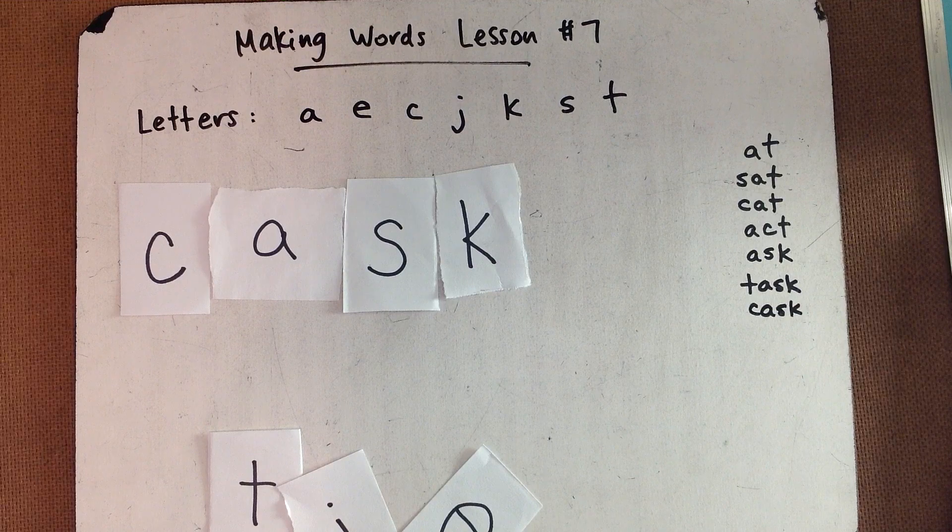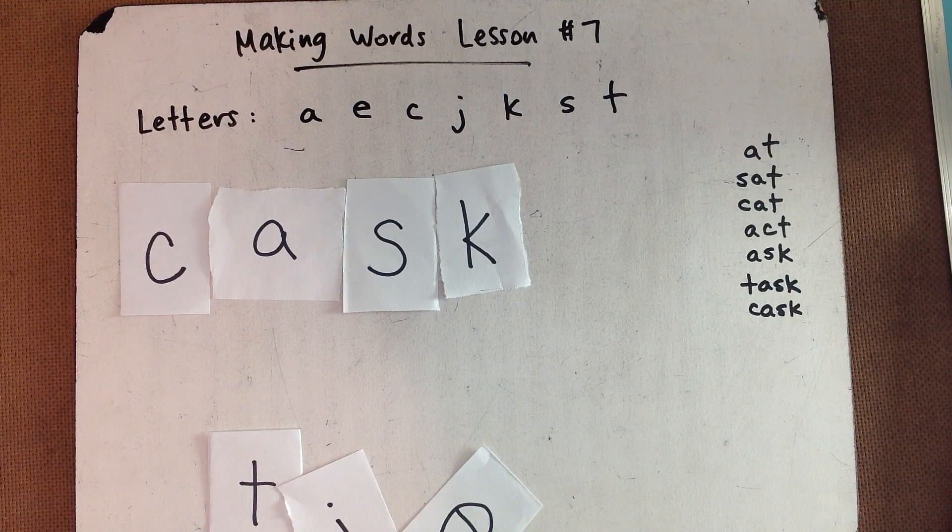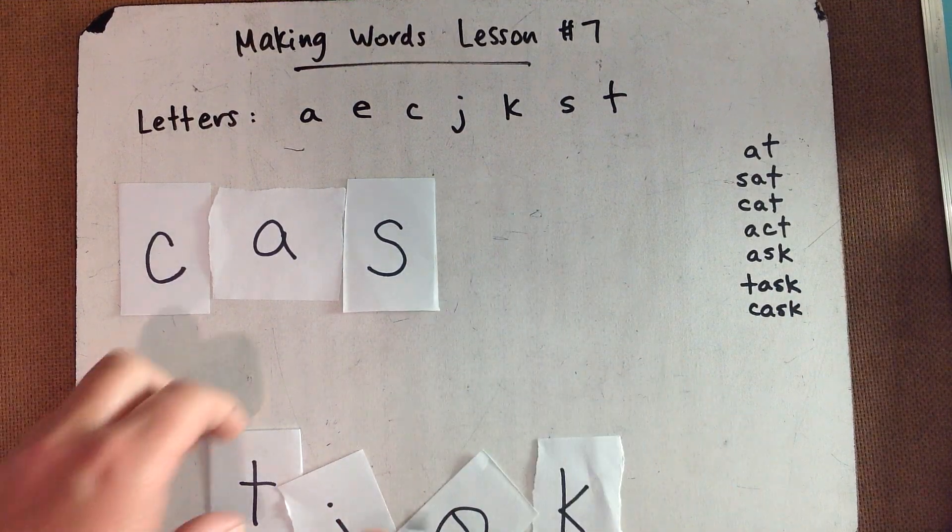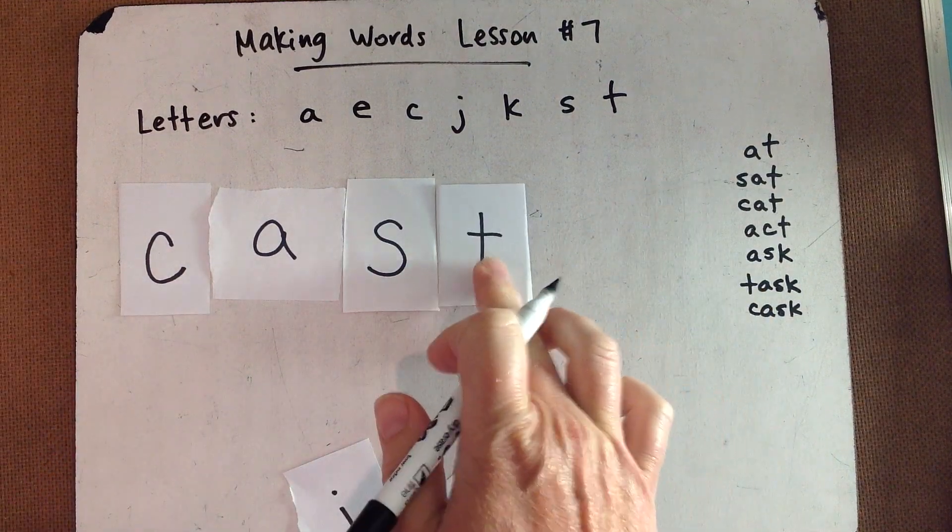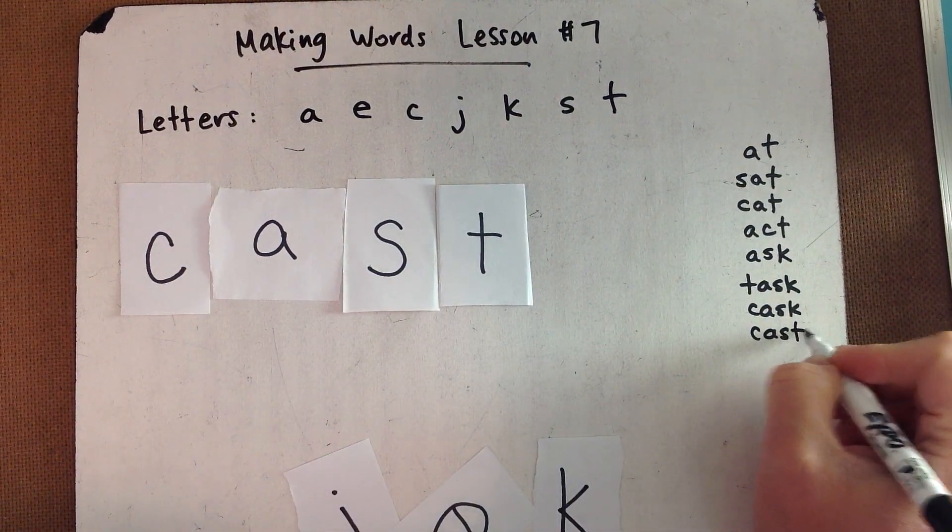Spell the four-letter word cast. Now we're just changing the sound at the end from a K sound to a T sound. Cast. C-A-S-T.